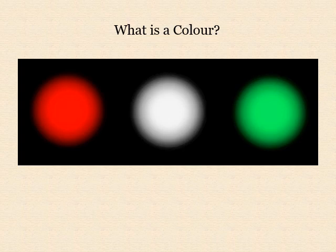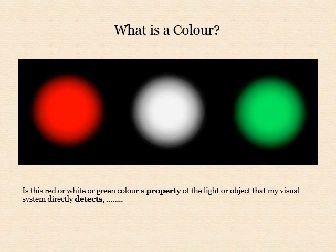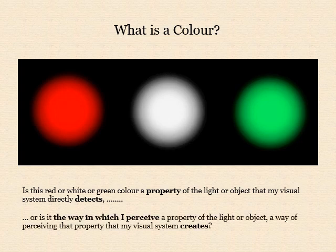When I perceive a light or an object to be red or white or green, I have the impression that this colour is a property of the light or the object. But what is not immediately clear is whether this colour is a property of the light or object that my visual system directly detects, or whether it is the way in which I perceive a property of the light or object — a way of perceiving that my visual system creates. While the first alternative has been called by some philosophers the common sense view of colour, scientific consensus is firmly with the second alternative.